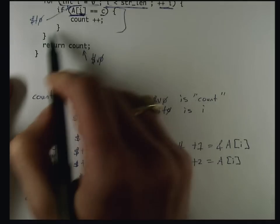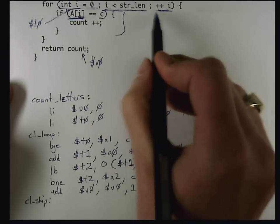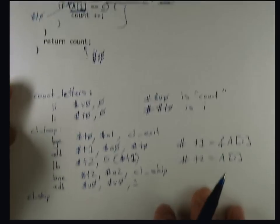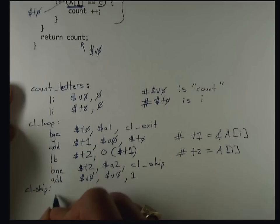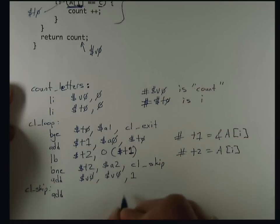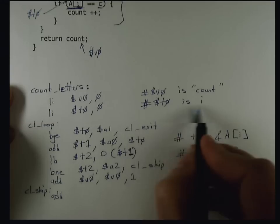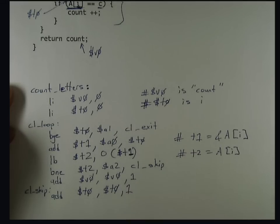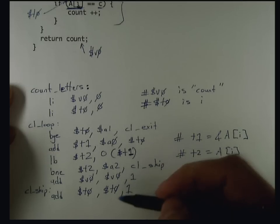Now I'm almost done with the loop. The thing I have to do is handle this I++ in the code, and so that's just adding 1 to I. I need an add instruction, and I is in T0, so I take it out of T0, add 1 to it, and put it back into T0.